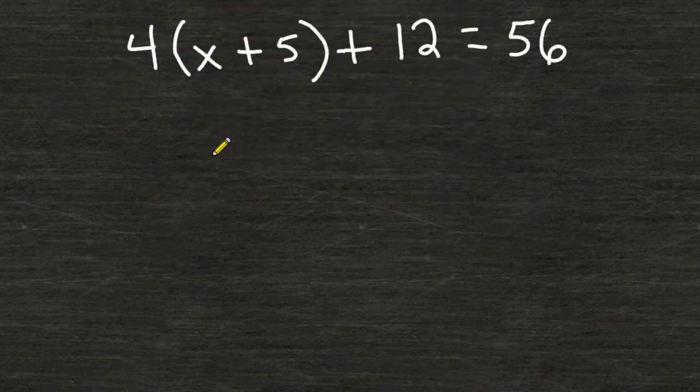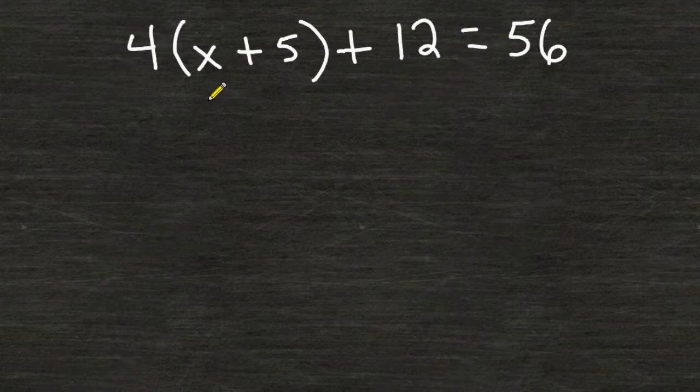In this equation, we have to figure out what the value of x is so when we plug in that value for x, everything on the left hand side of the equal sign will be equal to 56.